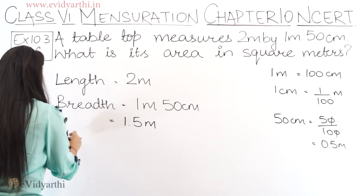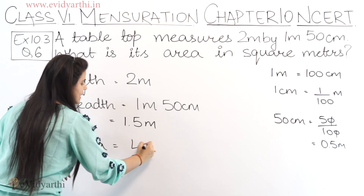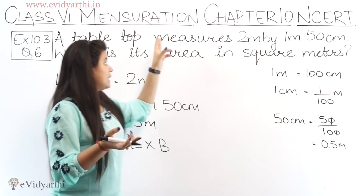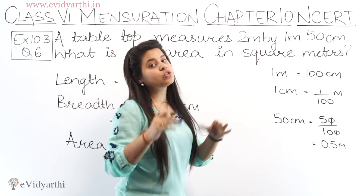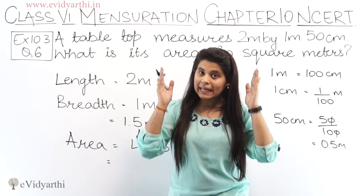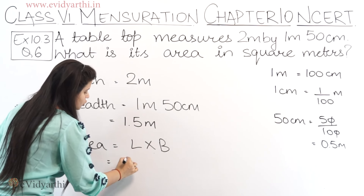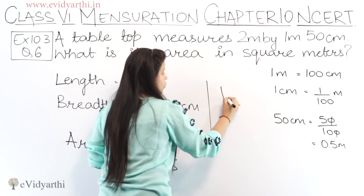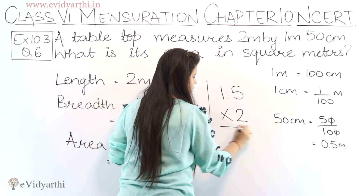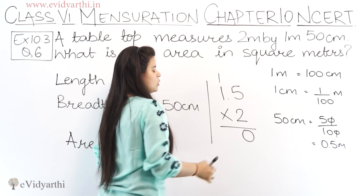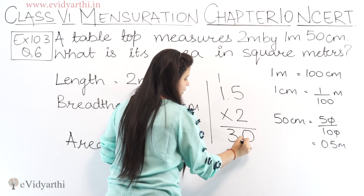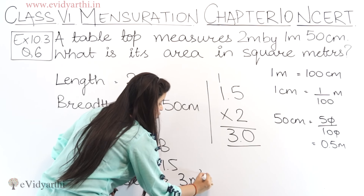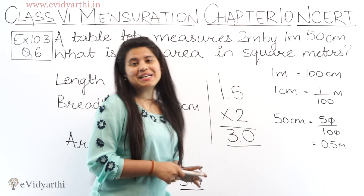Let's find the area. Area equals length multiplied by breadth. We use length × breadth because both length and breadth are given for this table top, which means it is rectangle-shaped. So, area = 2 × 1.5. Multiplying: 2 × 5 is 10, 2 × 1 is 2, plus 1 is 3, giving us 3.0, which is 3 square meters. The area of this table top is 3 square meters.